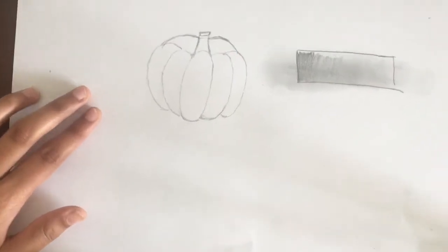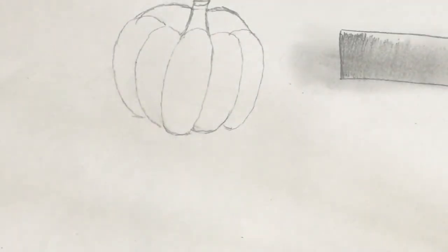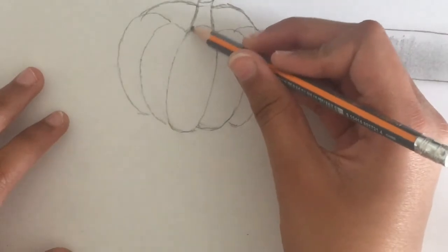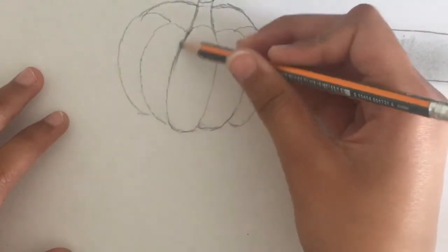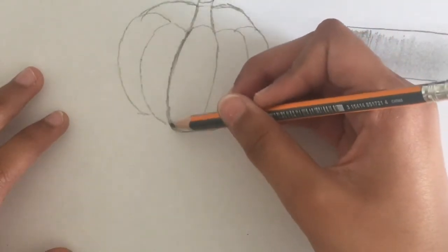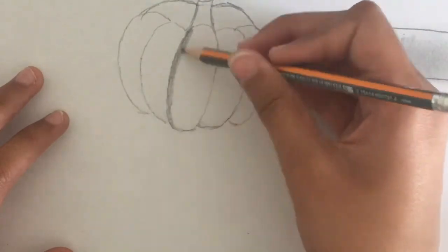That's kind of what I'm going for there. Now I'm just going to be shading in this pumpkin. What you guys would want to do is just go in darker on one side.